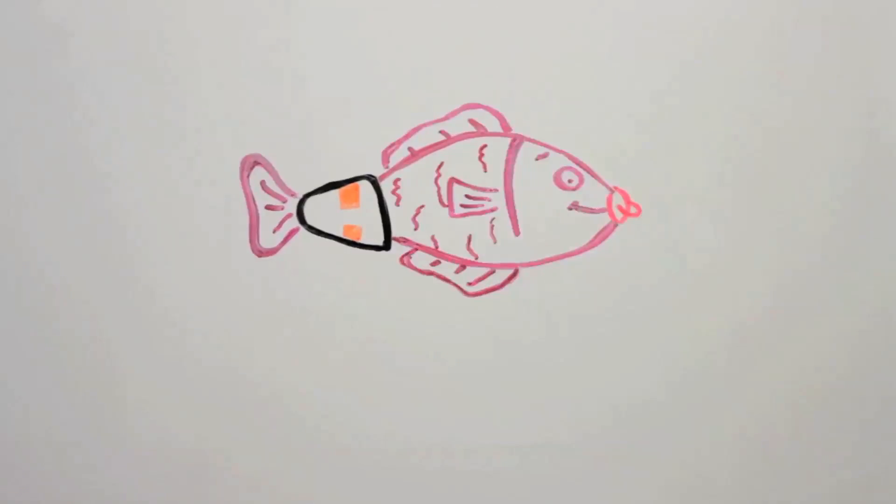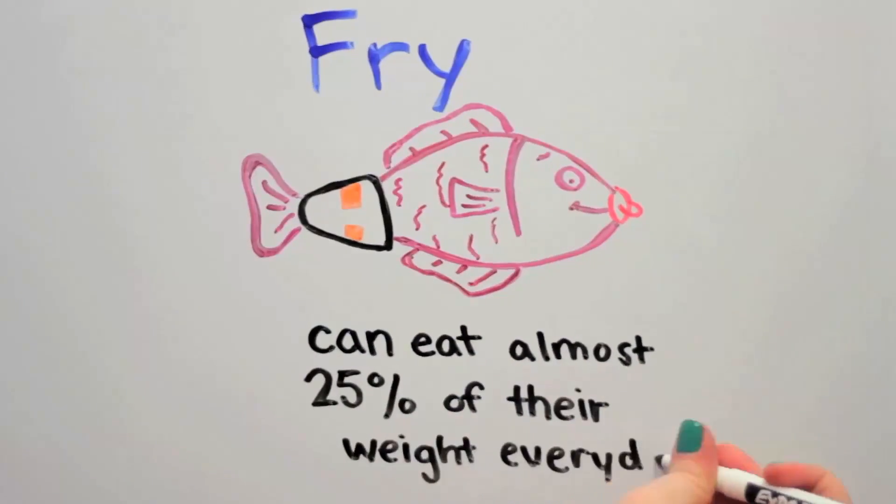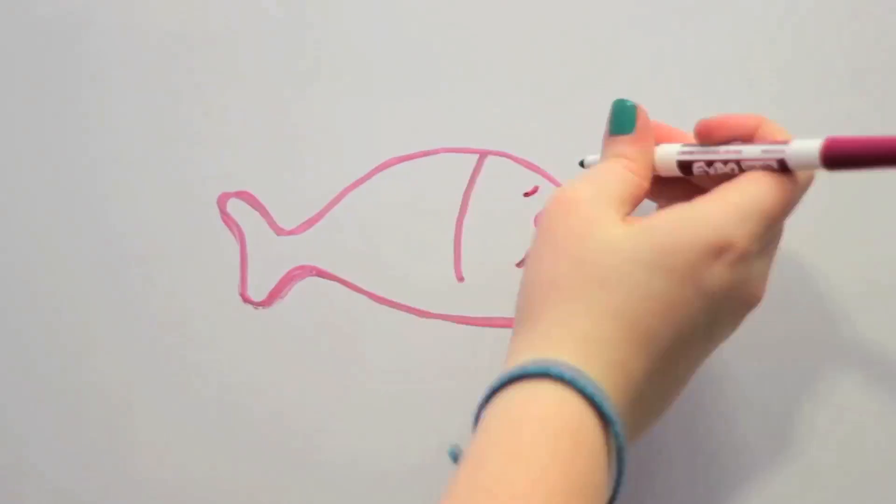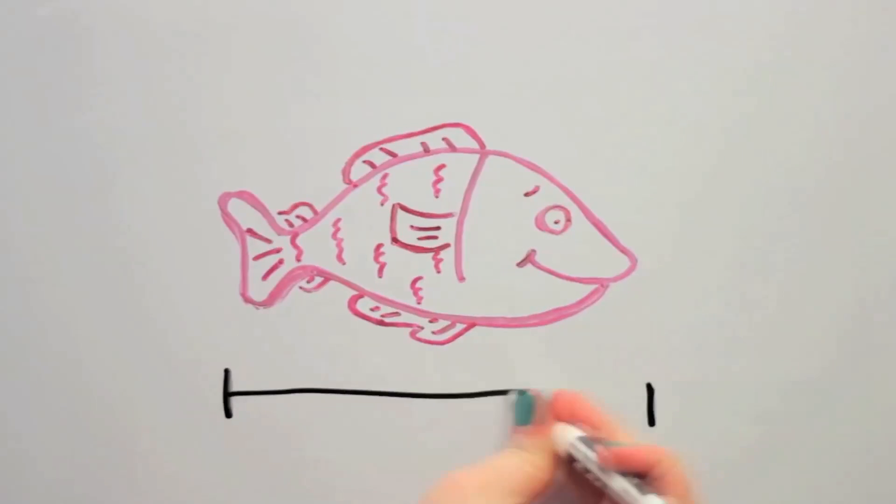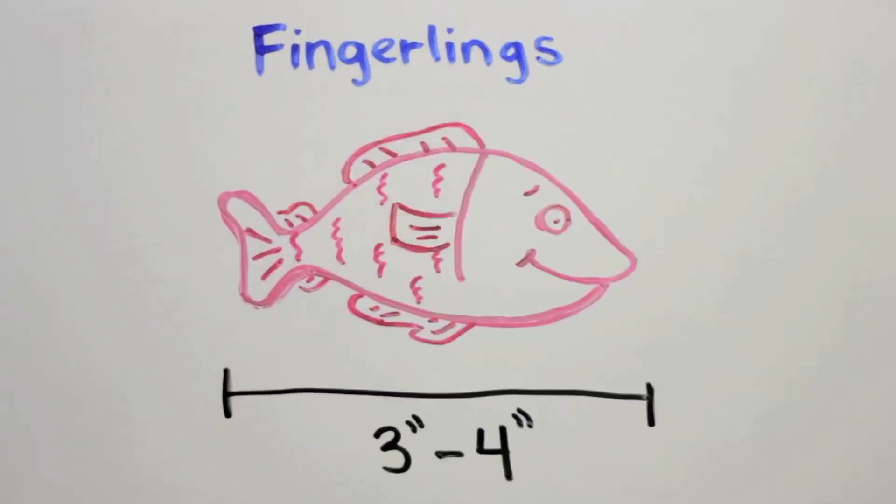These young babies are called Fry and they're super hungry. In fact, they can eat almost 25% of their weight every day. Nearly three months later, these babies have grown to four inches in size and weigh almost a tenth of a pound. We now call them fingerlings and they're ready to move into our big aquaponic system.